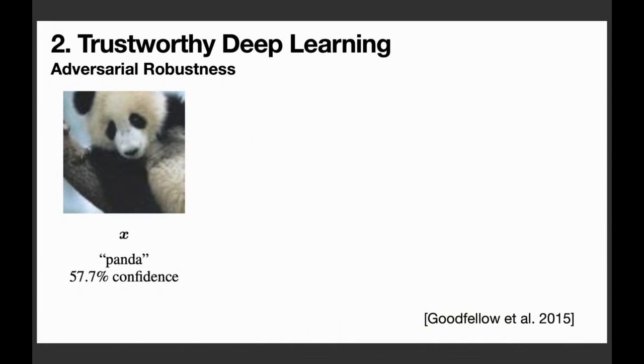The second subtopic is adversarial robustness, which is also gaining a lot of attention these days in the research community. To give an example here, we have an input image which is predicted as a panda by a neural network.